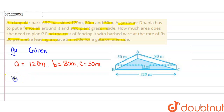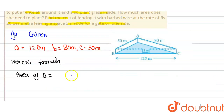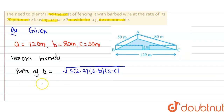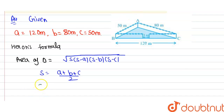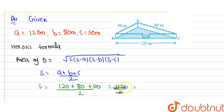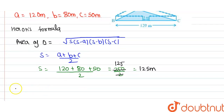Now we have to find the area of the triangle using Heron's formula. The area of triangle equals root over s(s−a)(s−b)(s−c), where s equals (a + b + c) / 2. The value of s equals (120 + 80 + 50) / 2, which is 250 / 2, giving s equal to 125 meters.